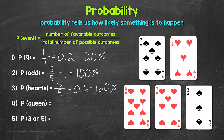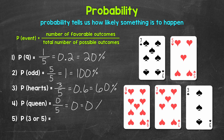Moving on to number four: what's the probability of picking a queen? It looks like we don't have any queens at all, so this is going to be zero. We have zero favorable outcomes — there aren't any ways that this event can happen. The total number of possible outcomes is five. Our fraction is zero over five, zero fifths. We have a zero out of five chance of picking a queen. Our decimal is zero and our percent is 0%. This is what we call an impossible event.